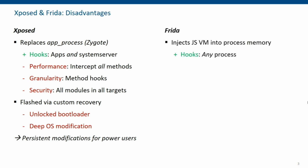Comparing this to Frida, we have a different approach: Frida injects the JavaScript engine of Chrome — the V8 engine — into running processes. Here again, you can hook not only apps but any process, which is a great thing. But I'll talk a little about the disadvantages.